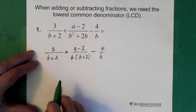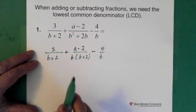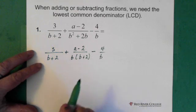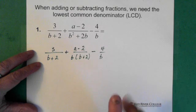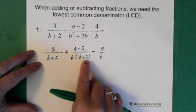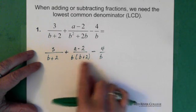Now we can see that our denominator, or our lowest common denominator, will be b times (b + 2). So we have the b + 2 here, b + 2 here, and we have a b here and a b here.